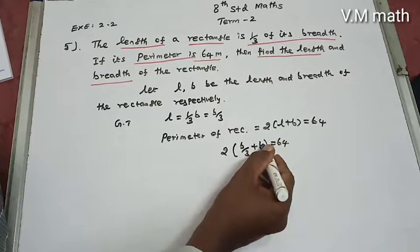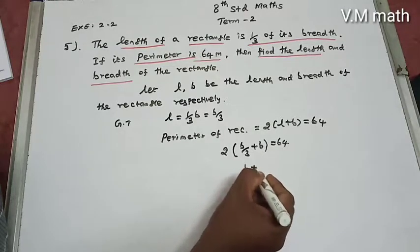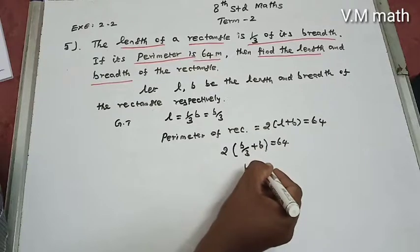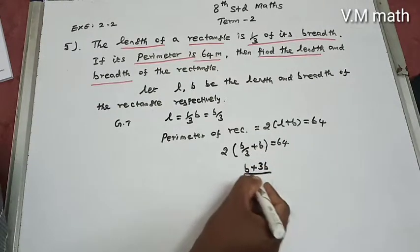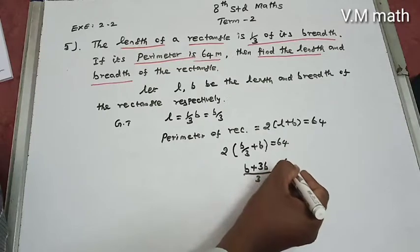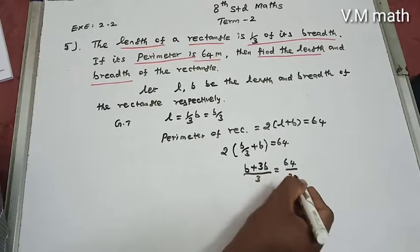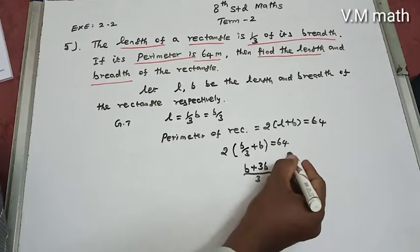Cross multiplying, we get B plus 3B, which is 3B. Then 3B divided by 3 equals 64 divided by 2. Canceling, this gives 32.